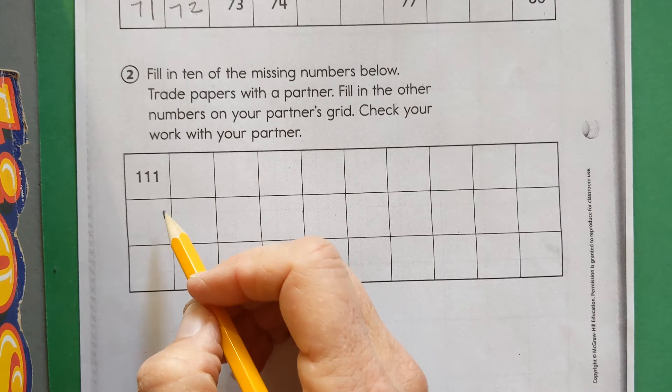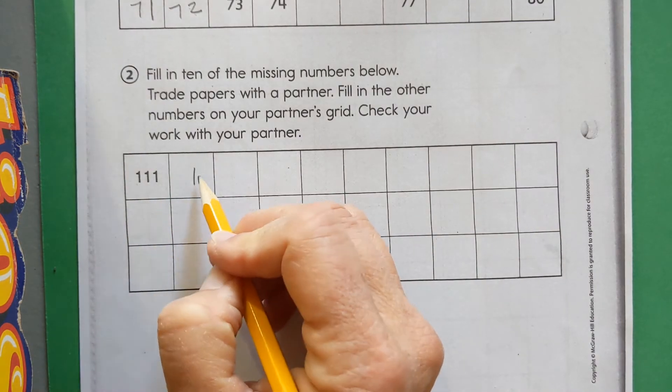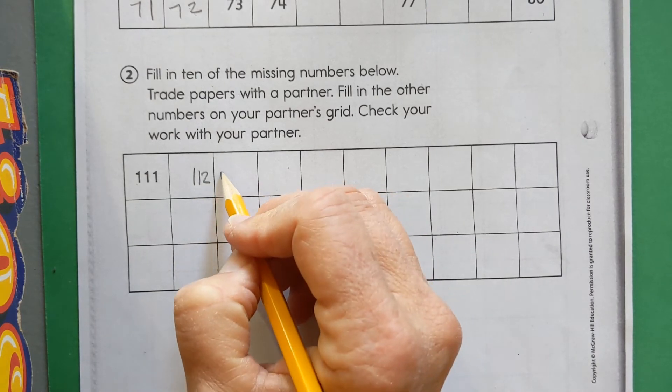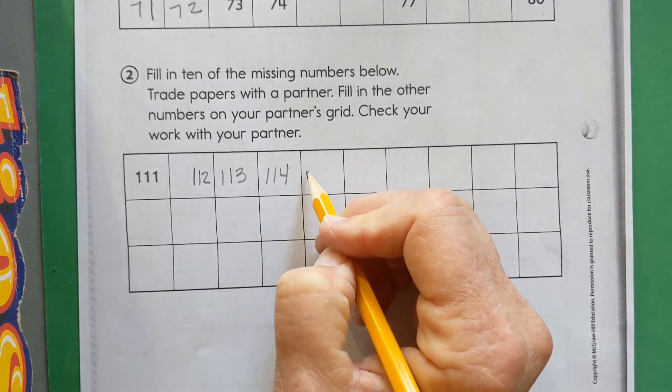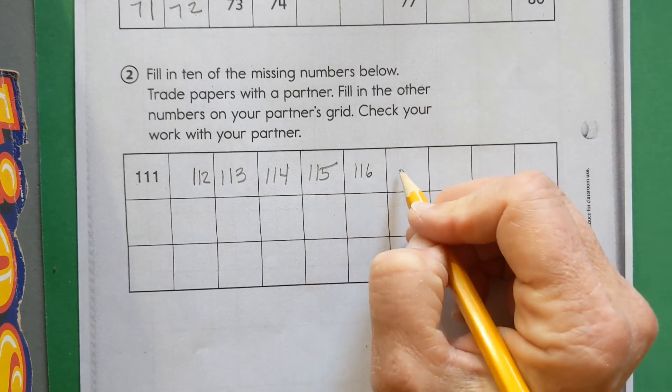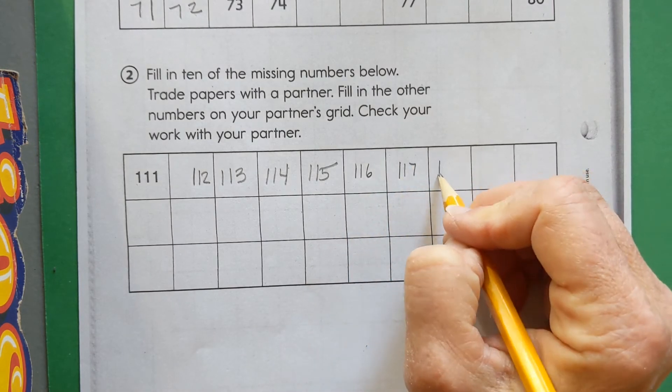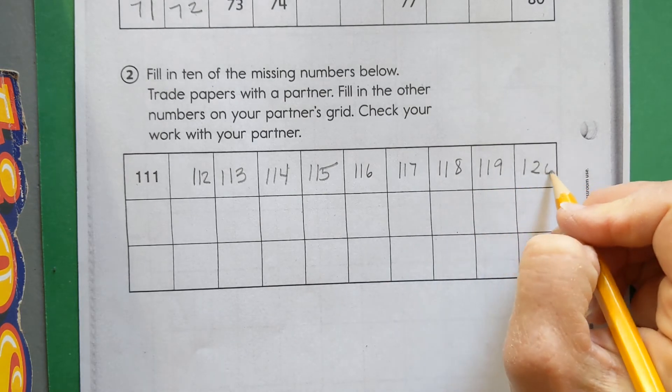So in case you weren't sure how to do it, that's how to do it. Why don't you pause one more time and you can fill in the rest of the row and then check. So here we go: 116, 117, 118, 119, 120.